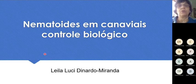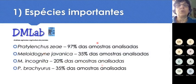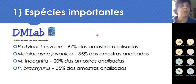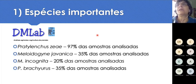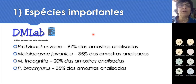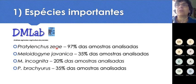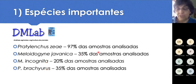Vamos falar um pouquinho sobre controle biológico de nematóides. Antes de falar propriamente do controle, eu gostaria de ressaltar quais são as espécies de nematóides importantes para a cana. Falo isso porque quando mandamos analisar uma amostra de canavial, principalmente em laboratórios de faculdade, vem uma série de nematóides no laudo. E tudo aquilo é importante? Não. Essas são as quatro espécies mais importantes para a cana-de-açúcar no Brasil, e também as mais importantes para o mundo todo. Colocadas aqui em ordem de importância para a cana-de-açúcar.